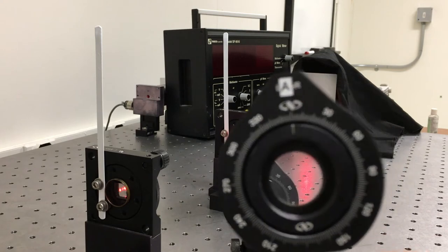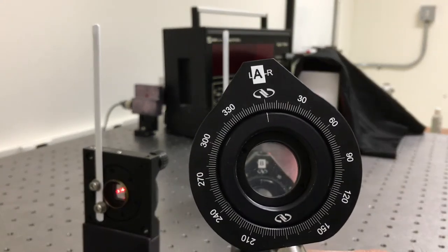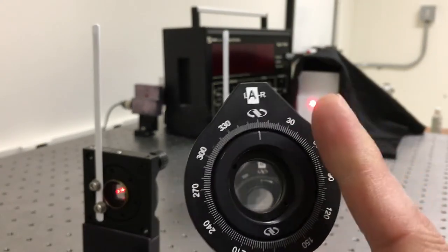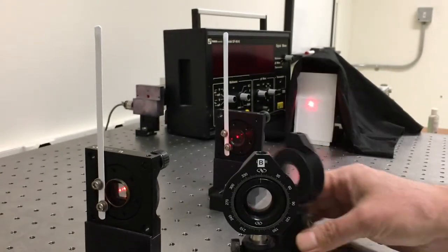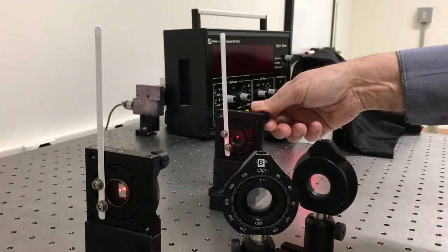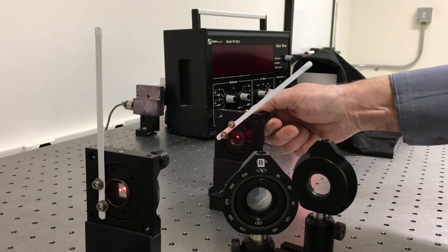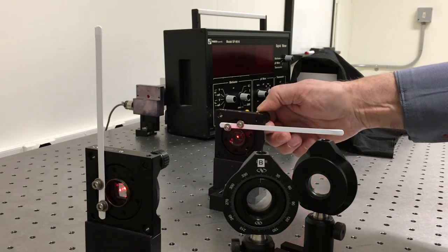These things are marked with a degree scale. Right now, I'm lined up with zero degrees on this. Well, first, let me align our polarizers so they're blocked. Right? They're at 90 degrees to each other.